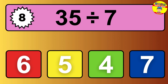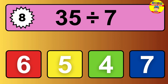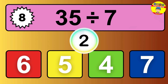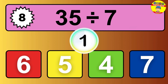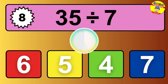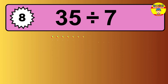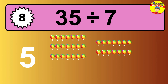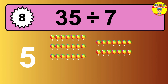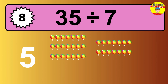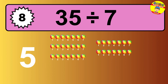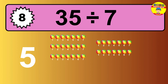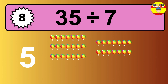35 divided by 7 — time to think. Let's go to the solution. Divide the number 35 by 7. Each group contains 7 units, so dividing 35 by 7 results in 5 equal groups. Thus, the result is 35 divided by 7 equals 5.